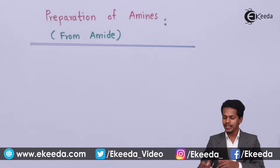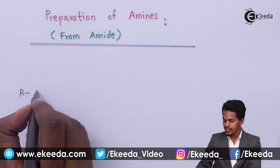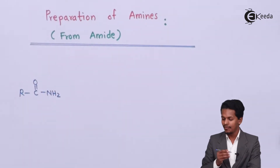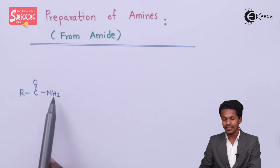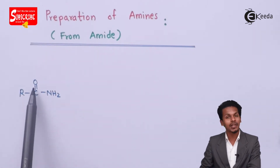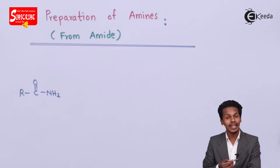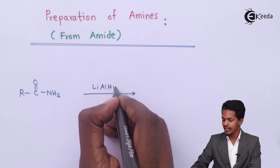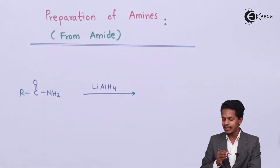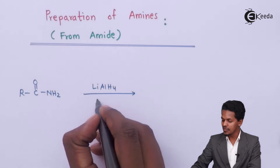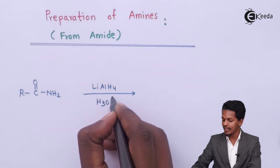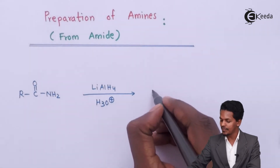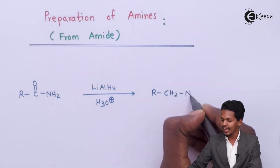If we are talking about amides, amides are nothing but RC(=O)NH2. This is the general formula for amides. We already have NH2, so the only thing we have to do is reduce this carbonyl group C=O to CH2, and for that we use lithium aluminium hydride (LiAlH4). So if we react this amide with lithium aluminium hydride in the presence of acidic conditions H3O+, this C=O will be converted into RCH2NH2.